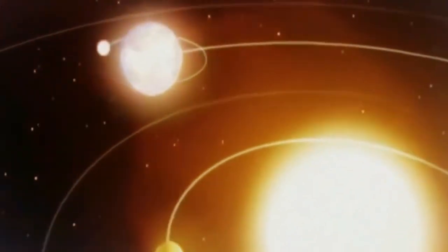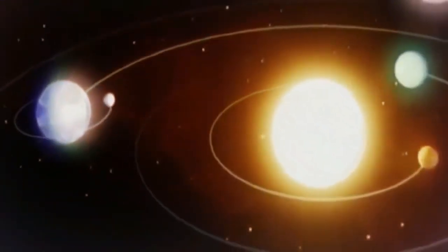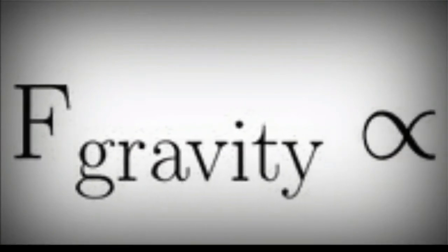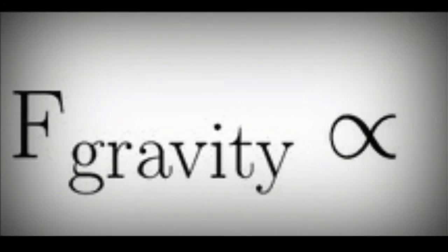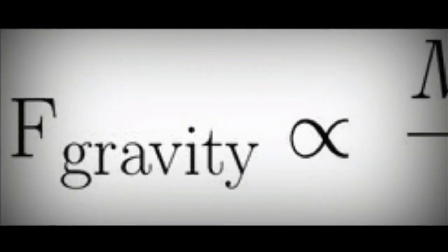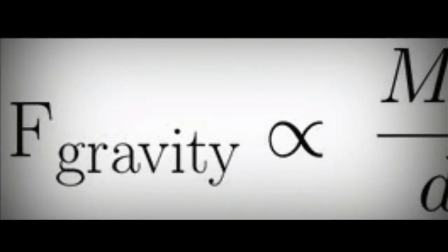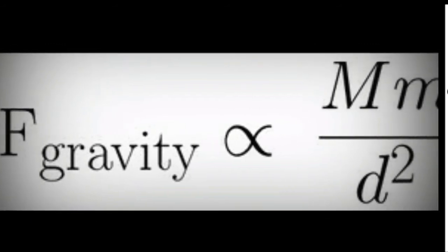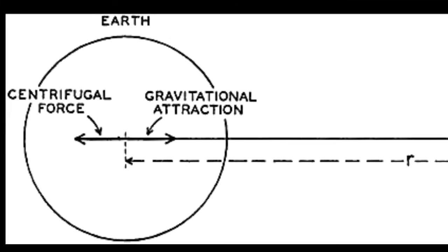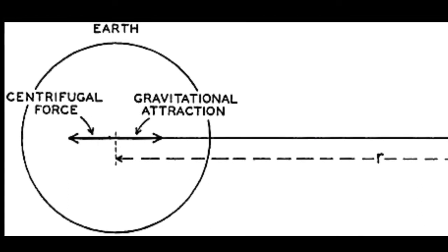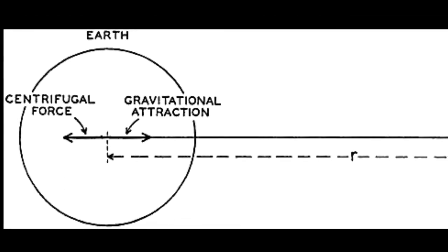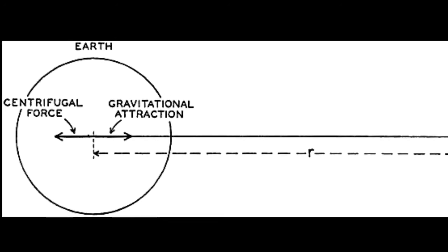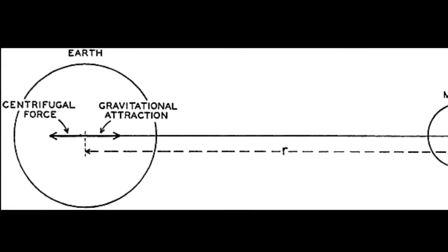Using this theory, Newton explained the revolution of the Moon around the Earth, and also the revolution of other planets in the universe. For this, he gave an equation: gravitational force is directly proportional to the product of the masses of the two bodies, divided by the square of the distance between them. In simple terms, any two bodies — however small or large — attract each other, but this force is very small.